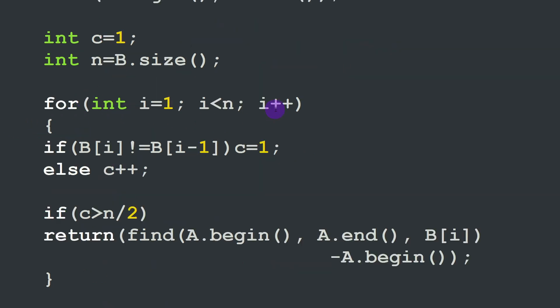Then we can loop over all the elements of B and check if any element B[i] is different than B[i-1], in which case we initialize C at one again. Otherwise if they are equal we can increment C by one. This is how we are going to count the number of occurrences of each element.